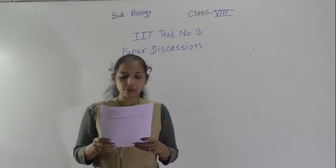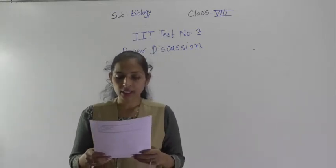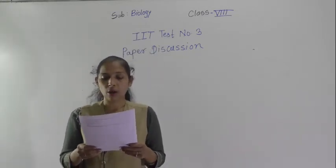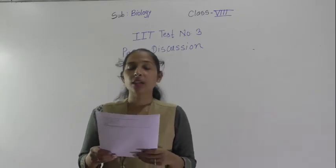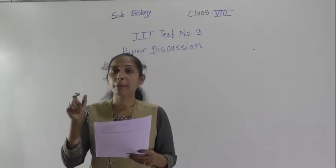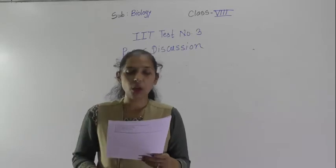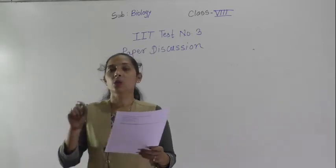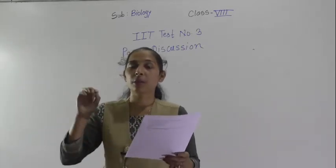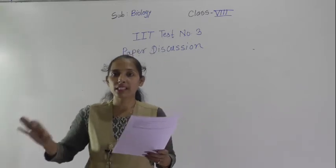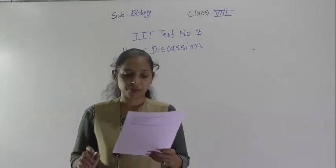Question number 2: the coloured organelles which are found in plant cells. The coloured organelles present in the plant cell are plastids. Plastids are the organelles which are present only in the plant cell and absent in the animal cell.